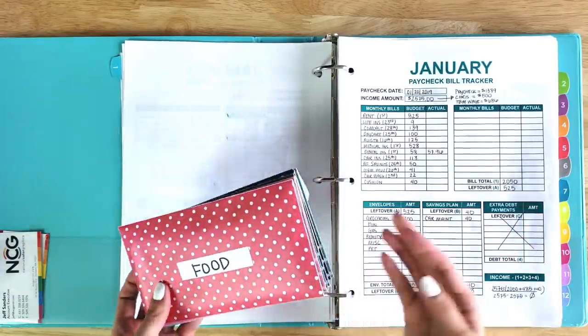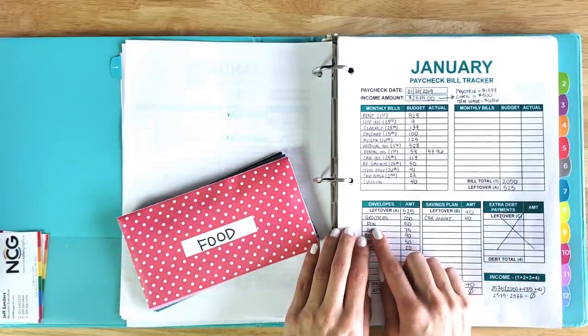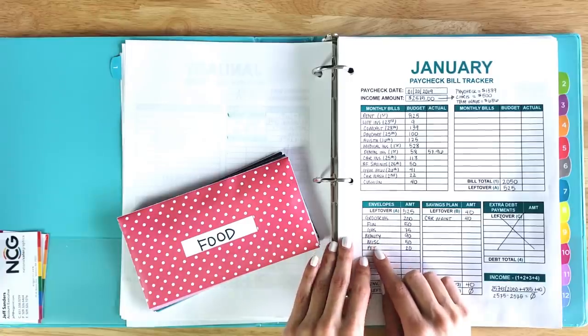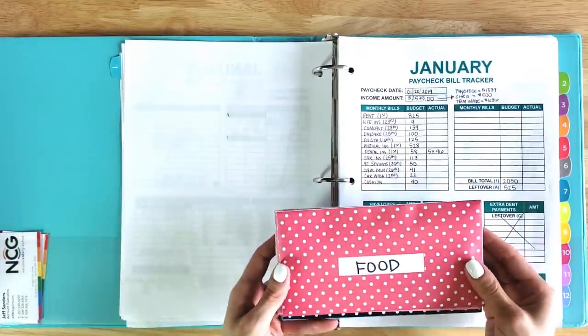For my cash envelopes, I have six categories that I spend: Groceries, fun, gas, beauty, miscellaneous, and pet. I have a cash envelope for each of those.